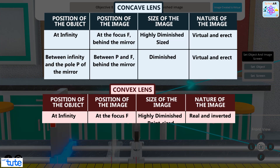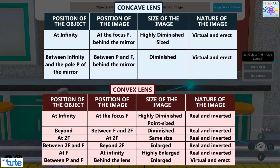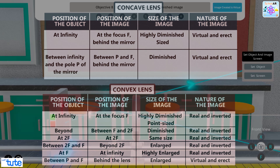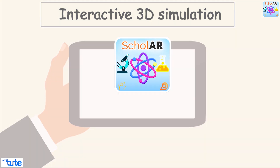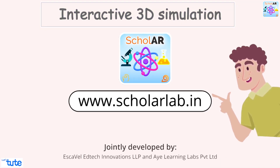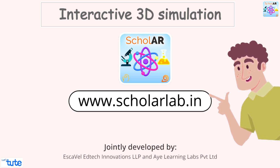These are the 8 objectives that we just studied for concave and convex lenses. I hope you have enjoyed this session. This session is based on an interactive 3D simulation called Scholar. Visit www.scholarlab.in to request a download of the software application to try this out for yourselves. Till then, keep watching, keep learning, and follow your curiosity. Thank you!